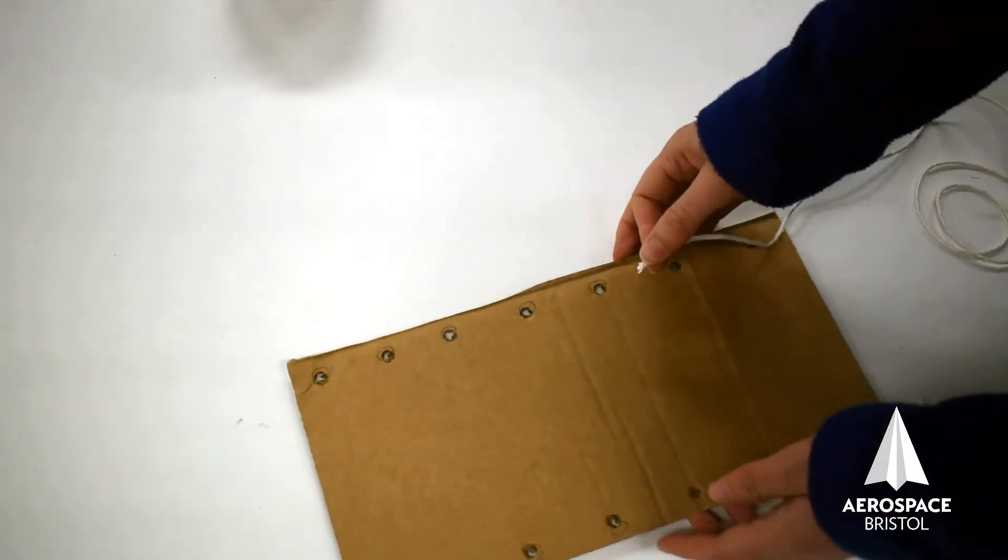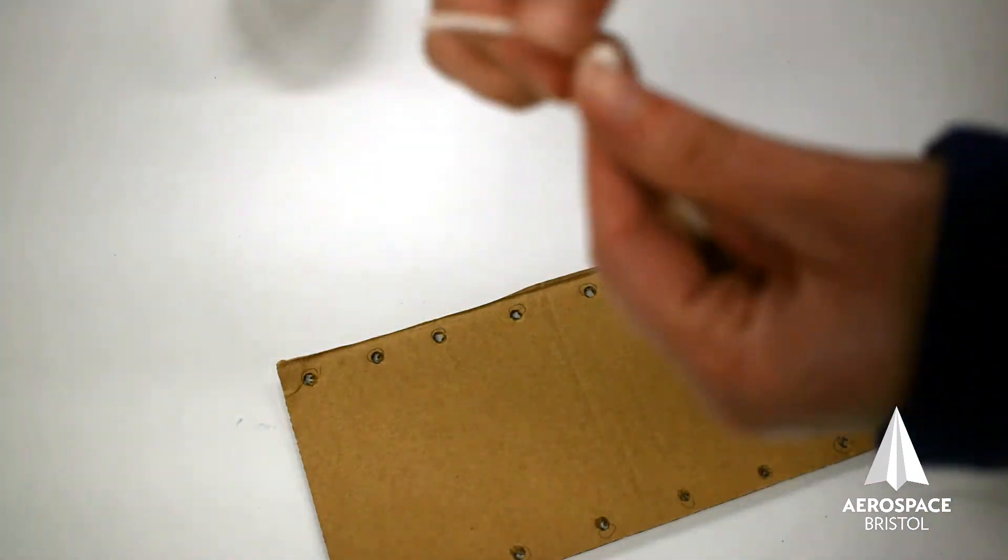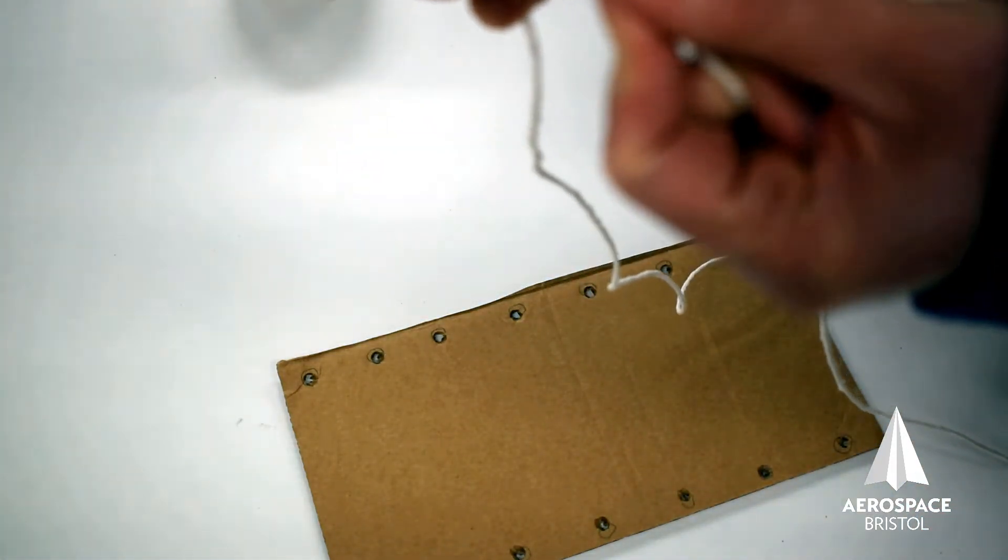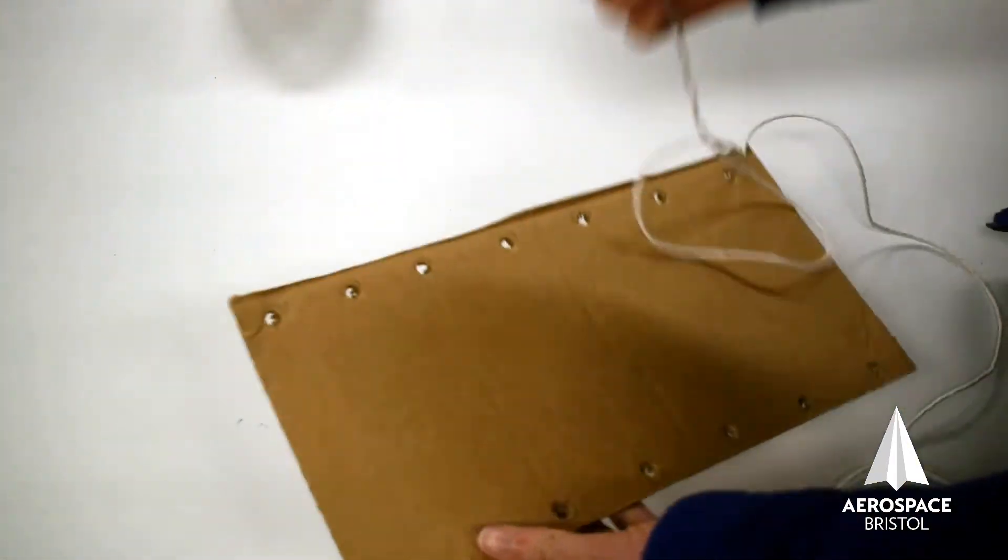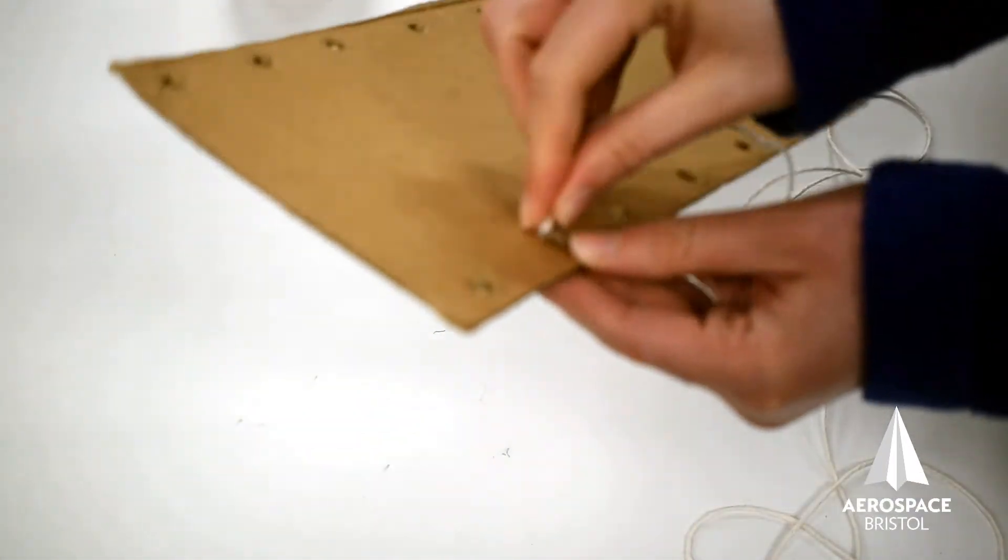So now we have our board. We've tied a knot in one end of the string. You don't have to do that, but it does make it easier. Now we're going to try and complete a dexterity task.